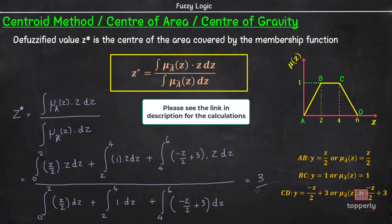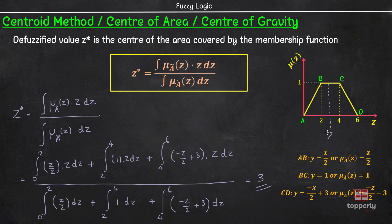On calculating this, we will get 3. So, the defuzzified value z* equal to 3.